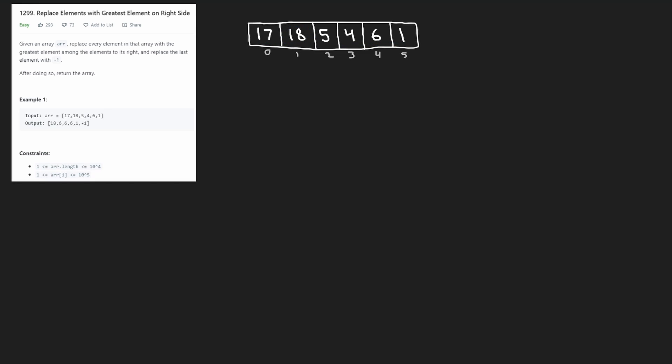The last element, 1, doesn't have any values that come after it, and the problem wants us to replace it with negative 1. So basically, we consider there's an imaginary negative 1 that's not part of the array — we're just going to replace 1 with this negative 1.